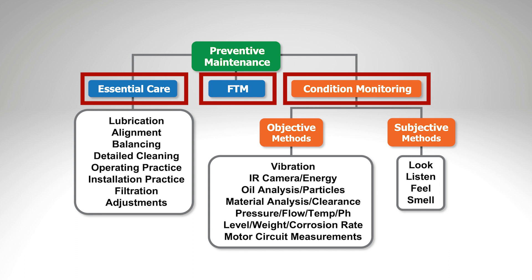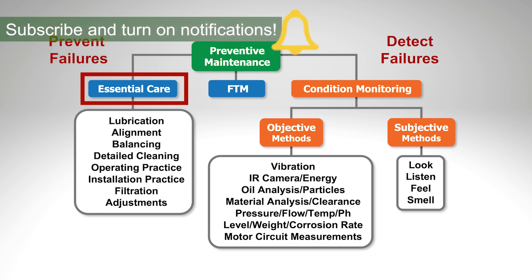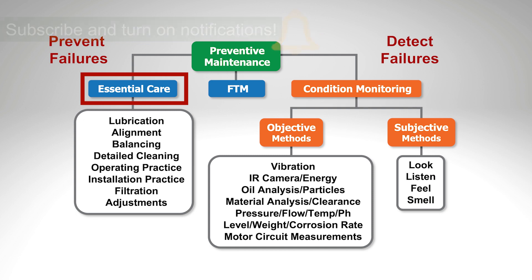We have three parts. On the left side we have prevent failures, and on the right side we have detect failures early. Essential care of equipment can prevent failures. Examples include lubrication, alignment of equipment and shafts, detailed cleaning of equipment, operating practices — how we actually operate equipment — installation practices, whether we have the right torque, whether we install bearings correctly or use a sledgehammer to put them on the shaft, filtration of air, water, lubricants, and adjustments. All these things directly impact the life of equipment.